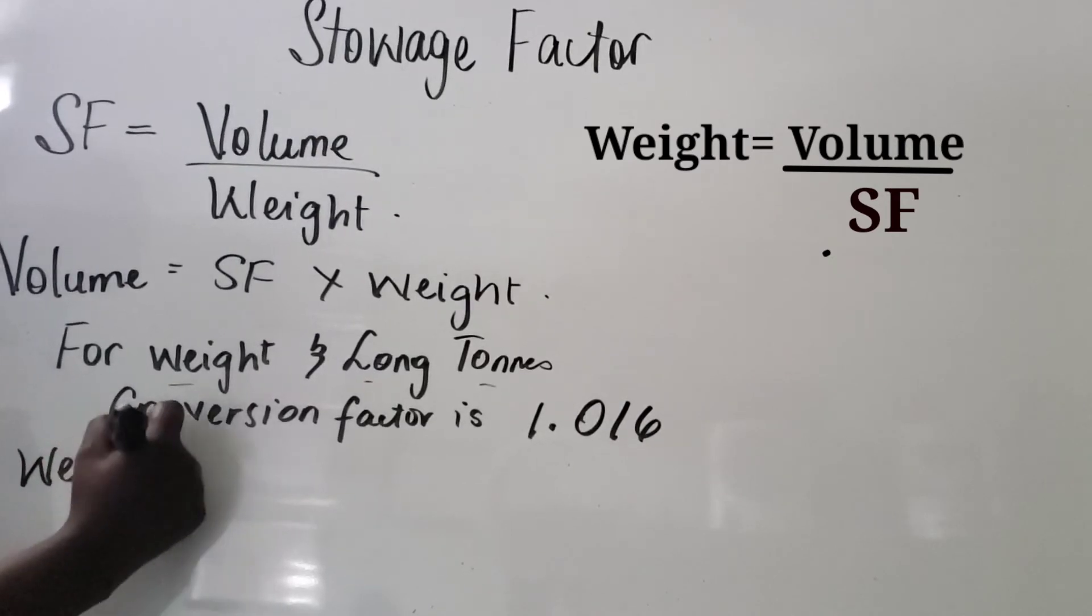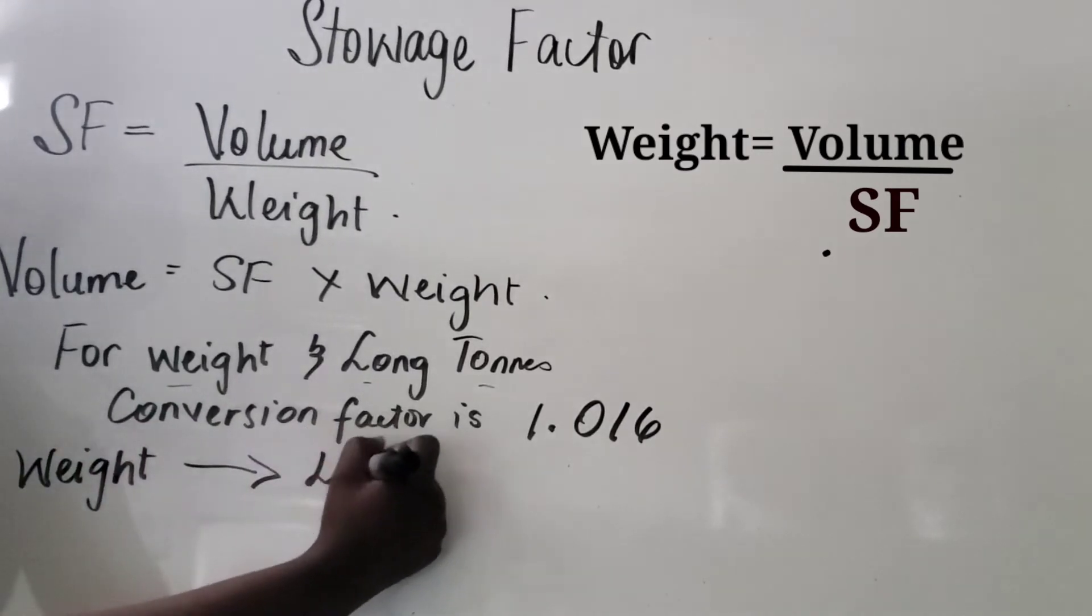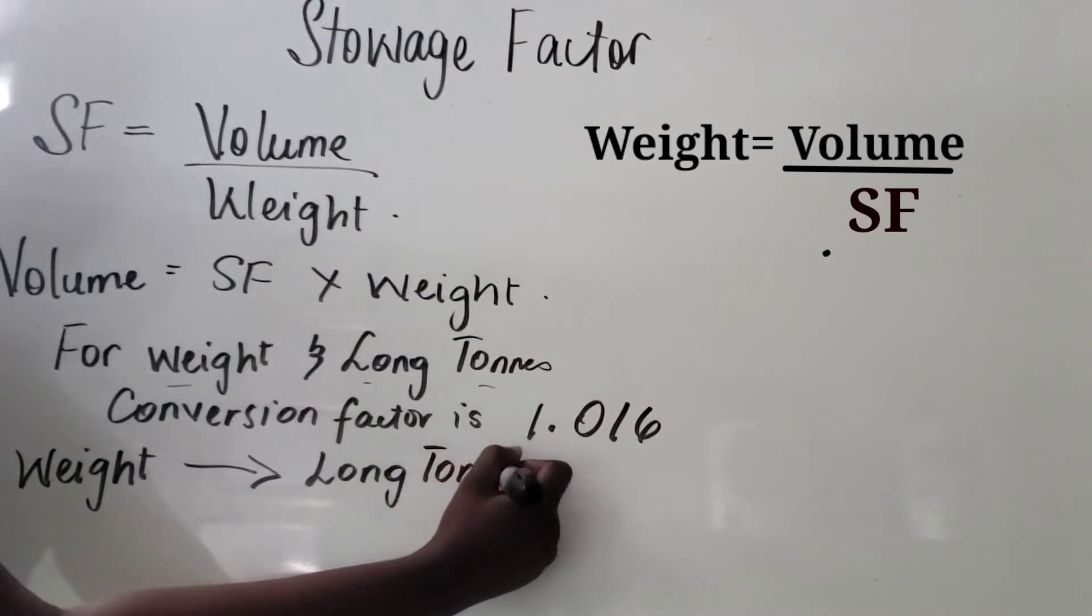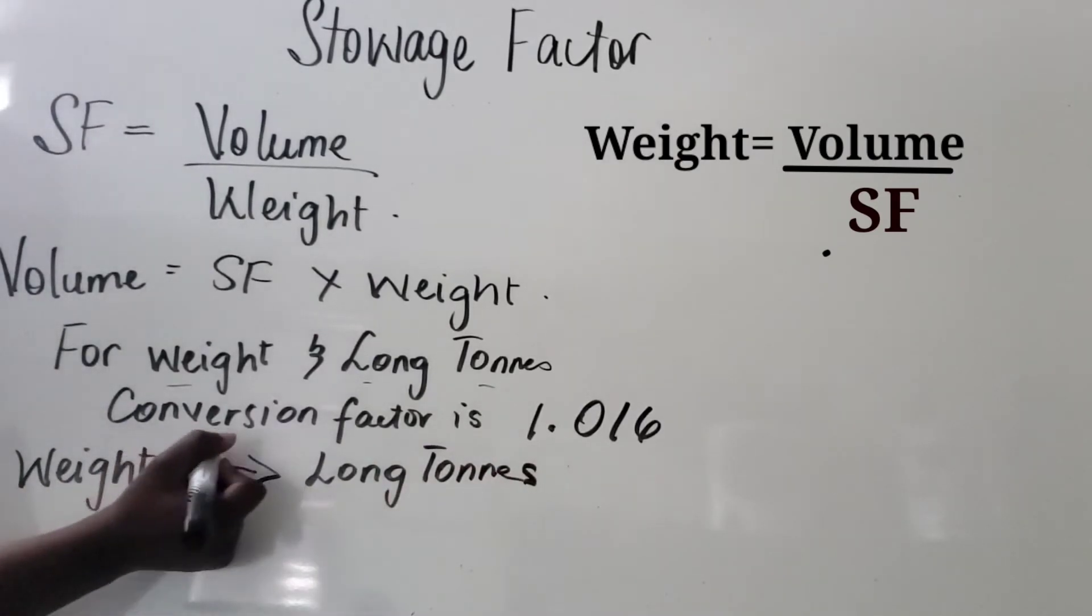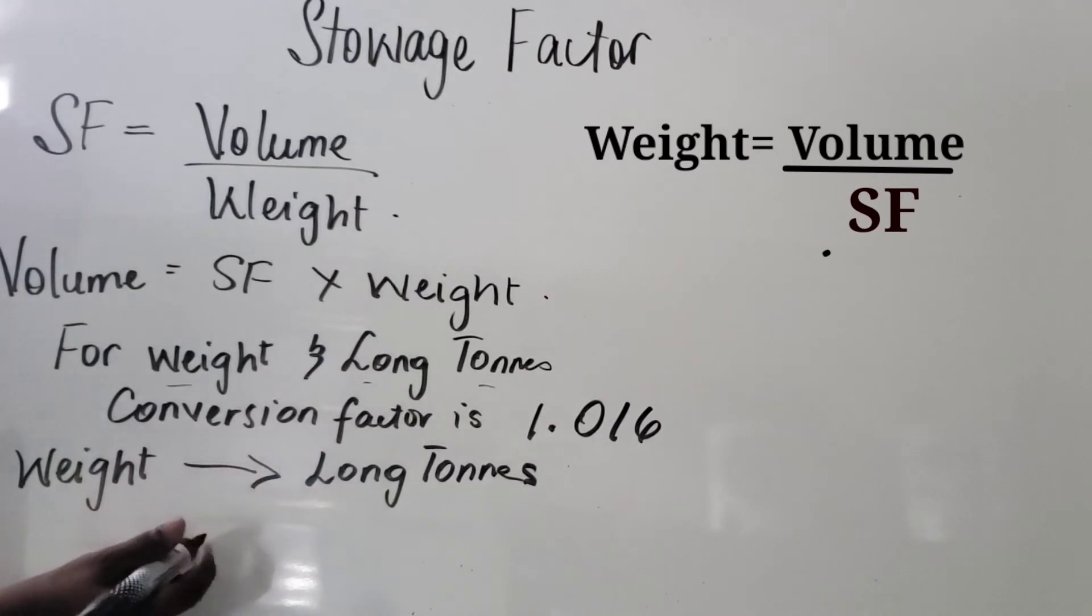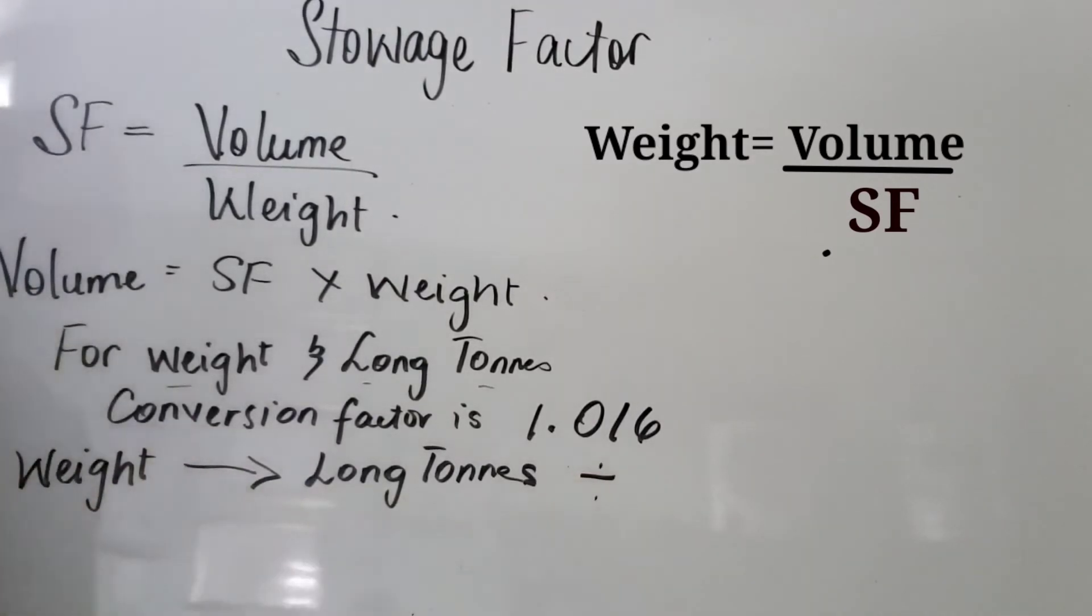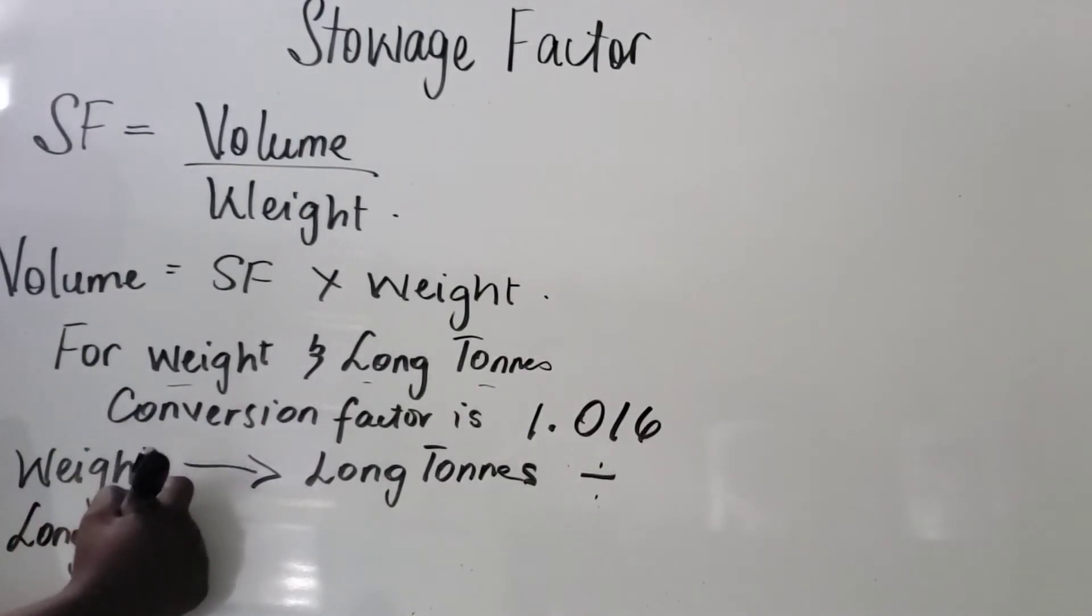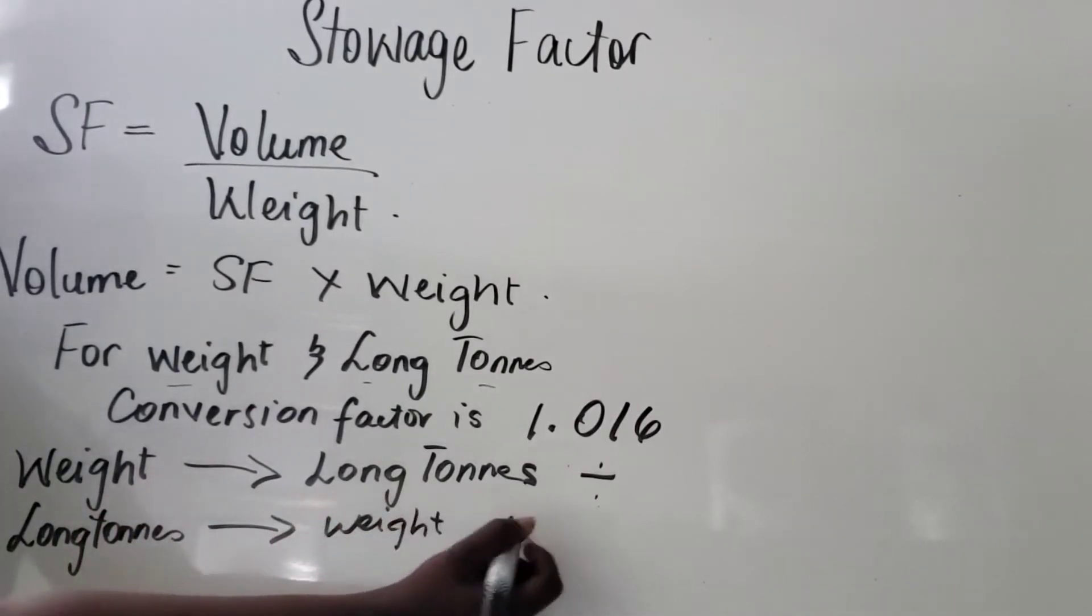When converting from weight to long tons or from long tons to weight, you either divide or multiply. From weight to long tons, you divide. From long tons to weight, you multiply.